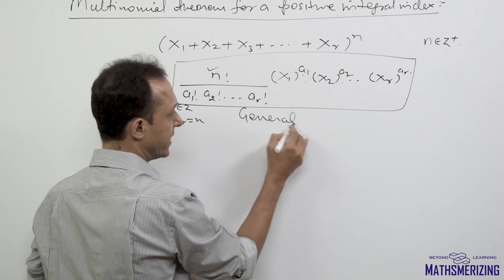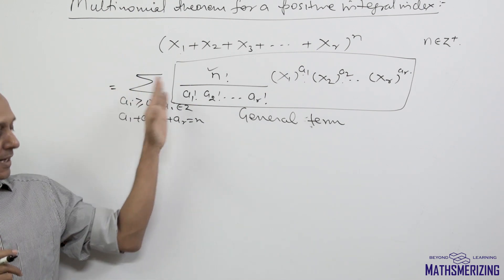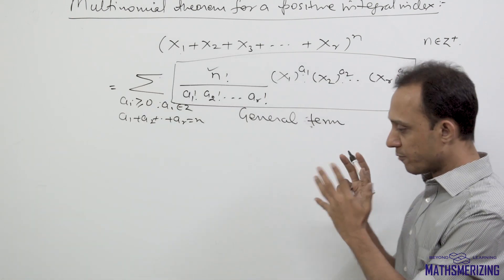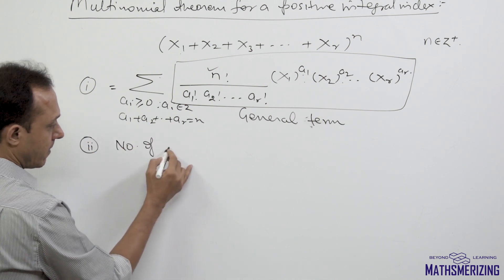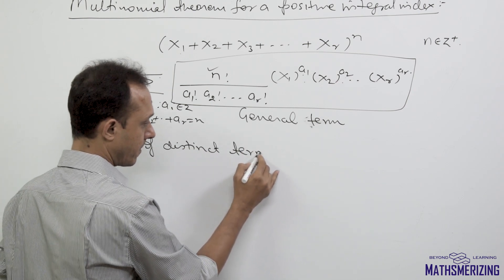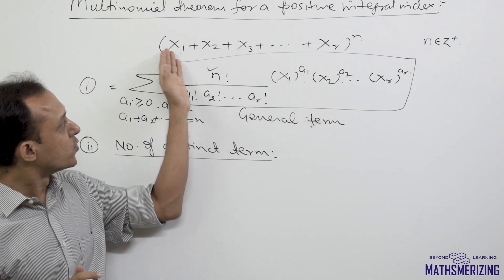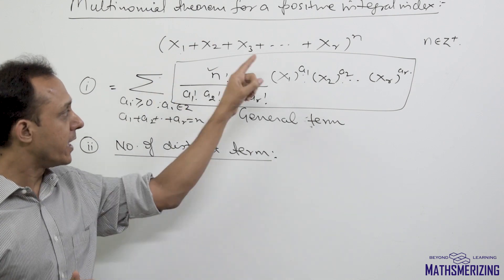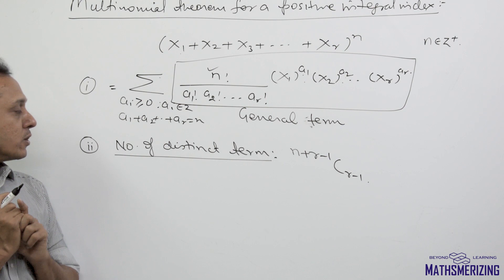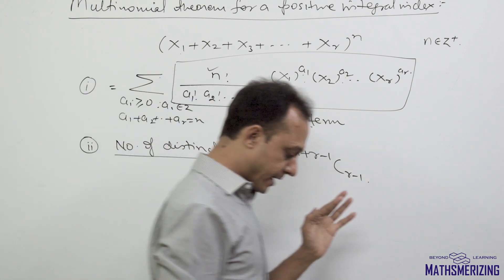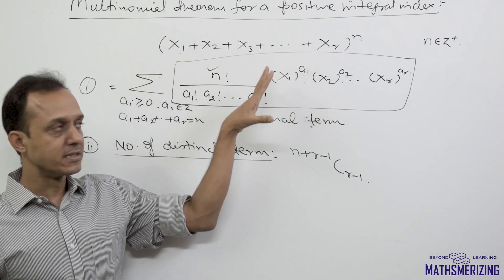There can be two types of questions: either write the general term of a multinomial expansion, or use the general term to work out problems. The second common topic is the number of distinct terms. When each variable x1, x2, x3, xr are unrelated or different variables, the number of distinct terms in the multinomial expansion of x1 plus x2 plus xr to the power n is given by n plus r minus 1 C r minus 1.